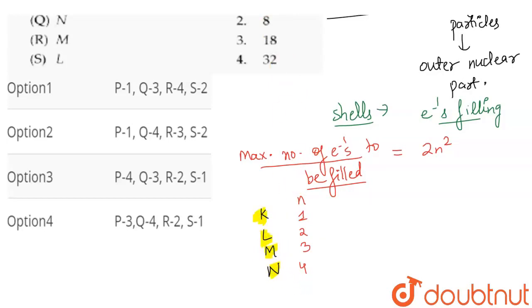So how do we find maximum number of electrons using this formula 2n²? For K shell n=1 so it's 2, L shell n=2 so it's 8, M shell n=3 so it will be 18, and fourth shell n=4 so it will be 32. These are the maximum electrons.